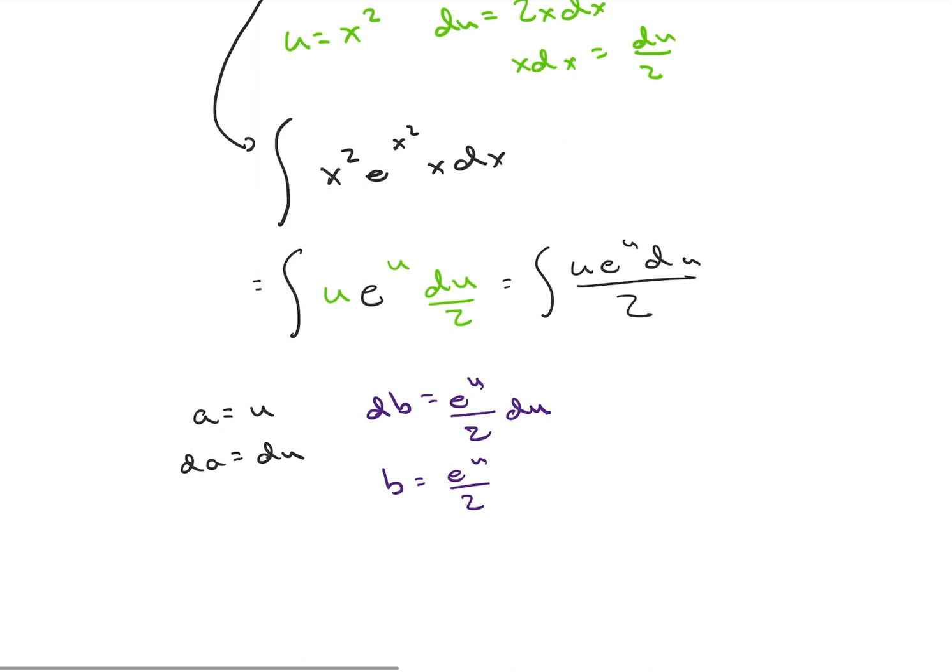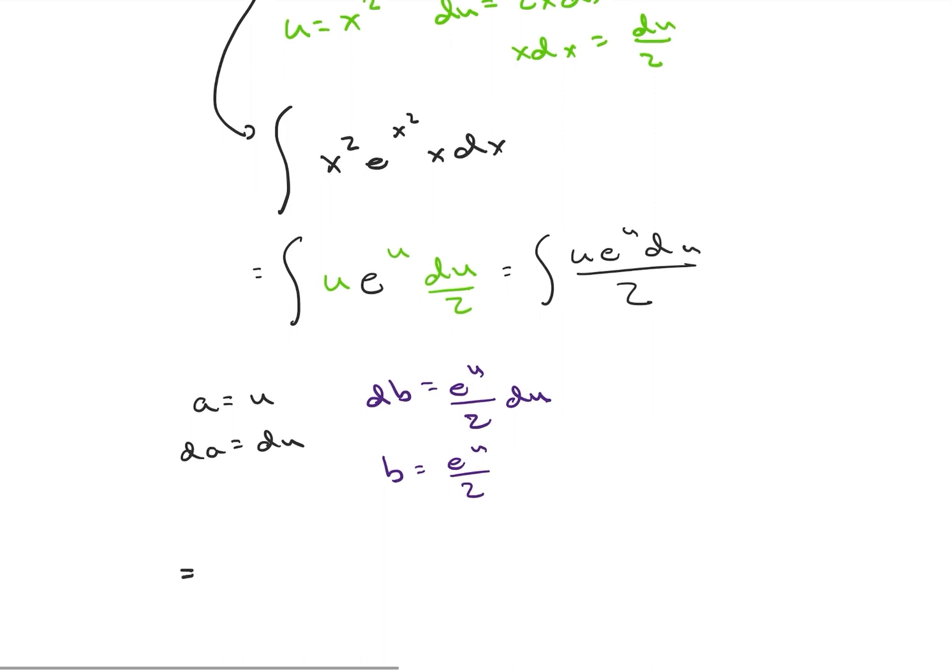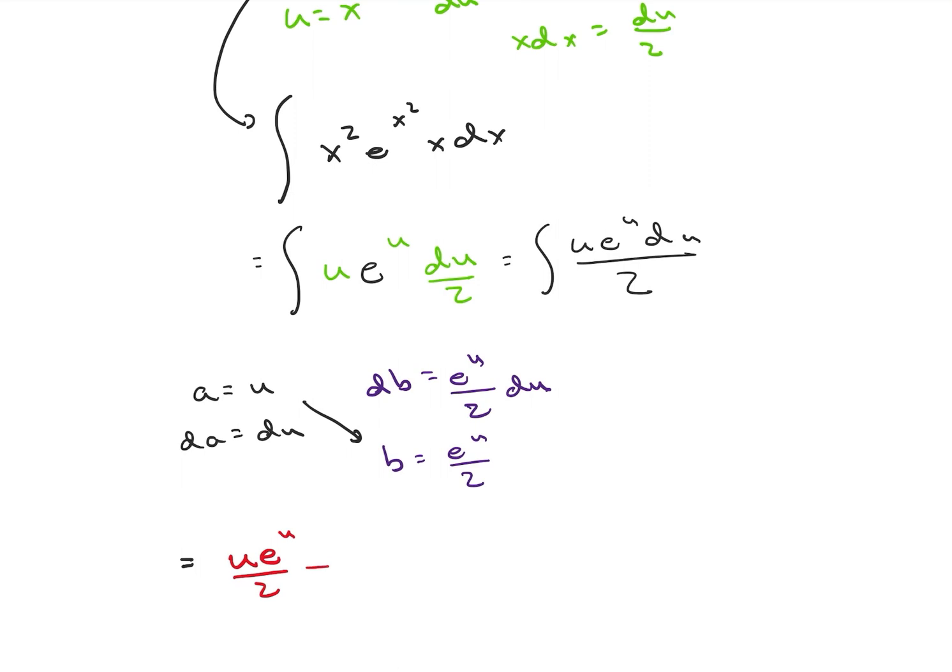All right. So when we go ahead and do integration by parts, we're going to have a times b. So we're going to have u e to the u over 2. This is indefinite. And then we're going to have minus the integral of b dA. So e to the u over 2 du.